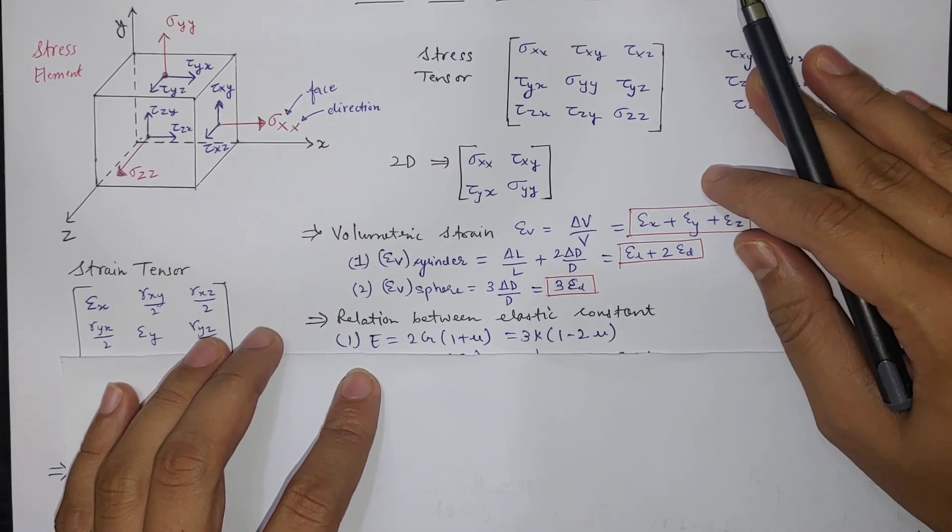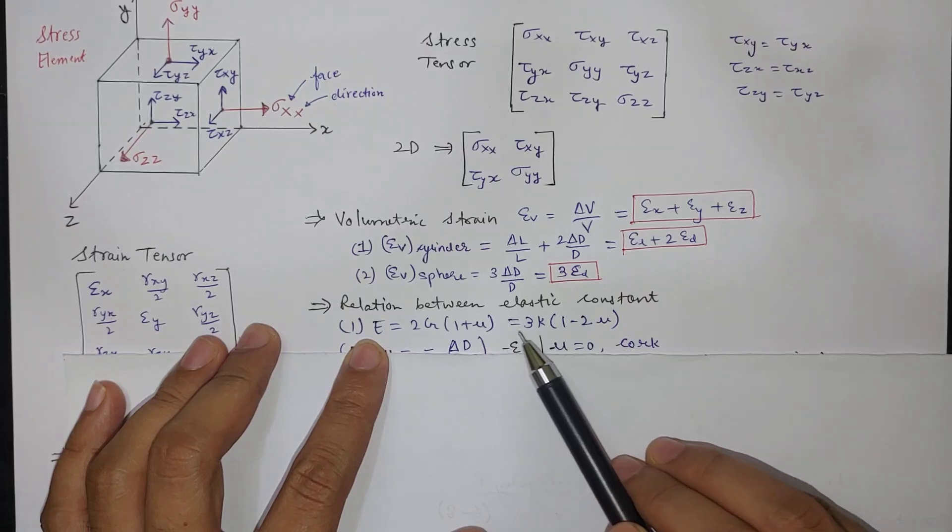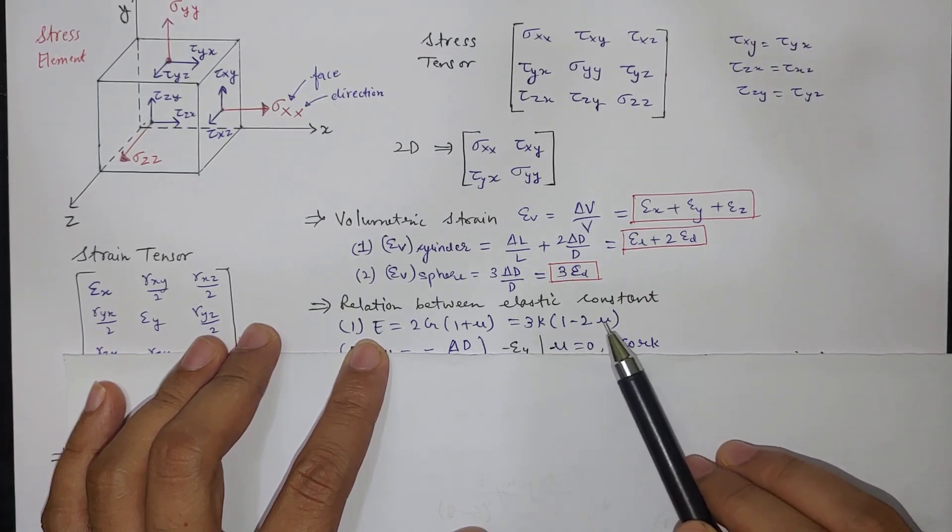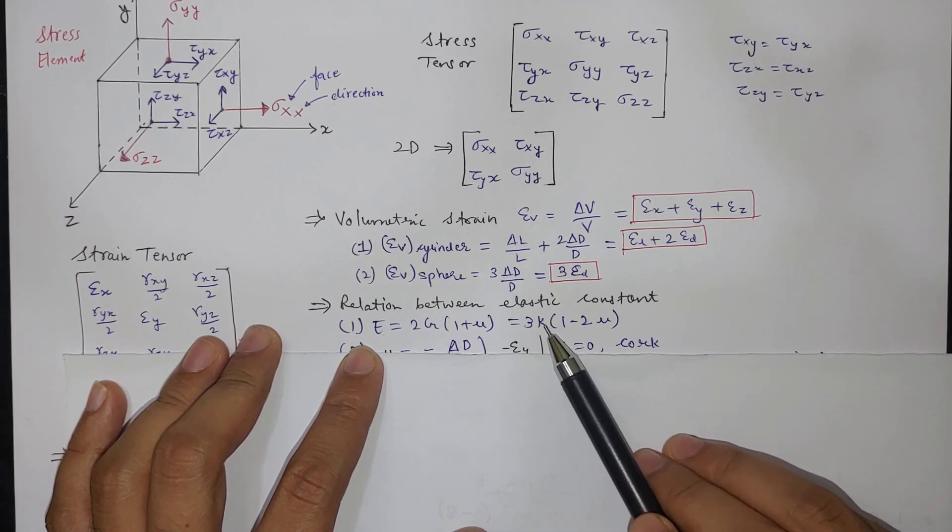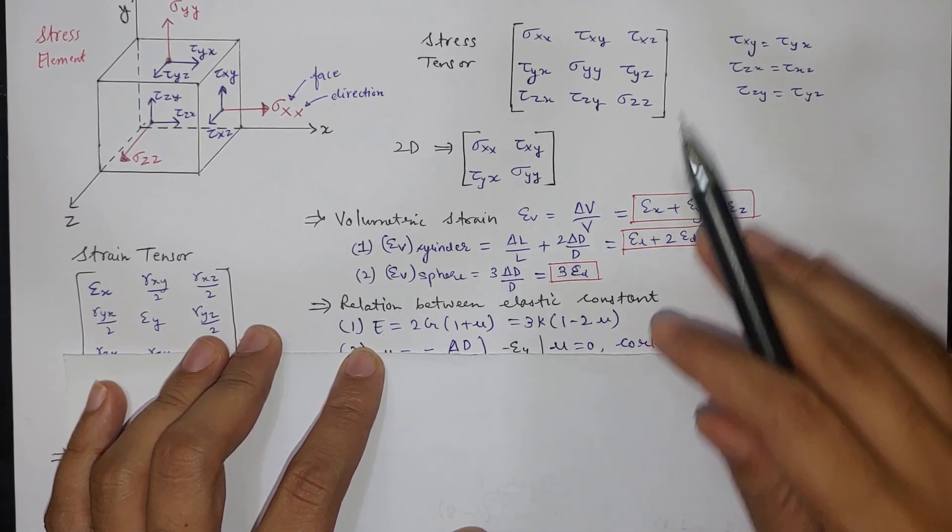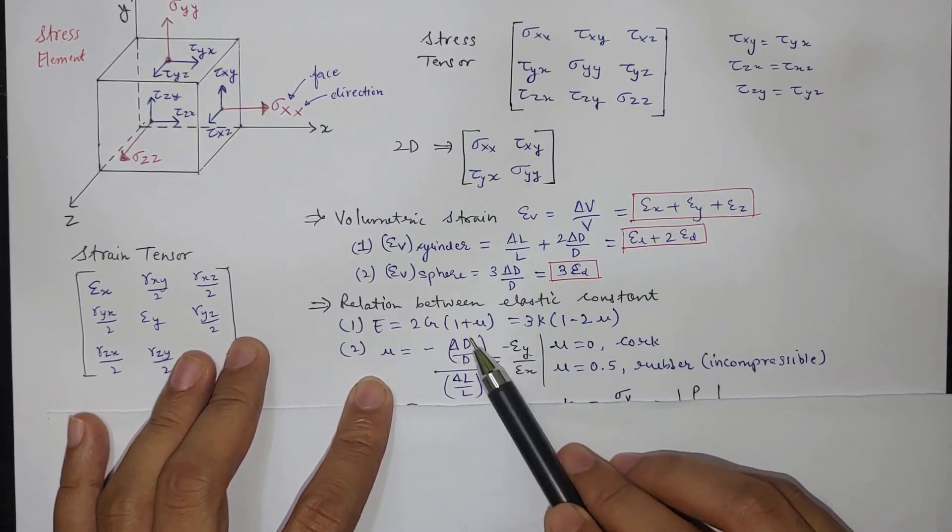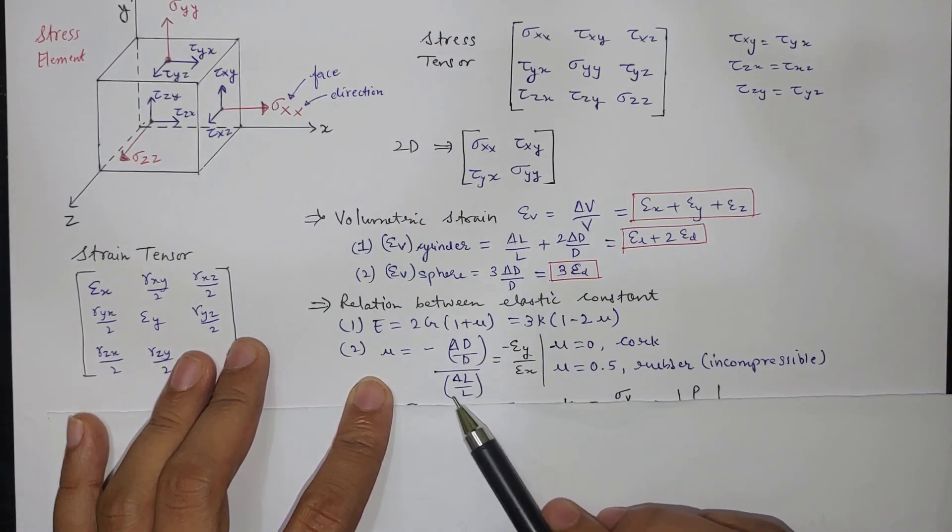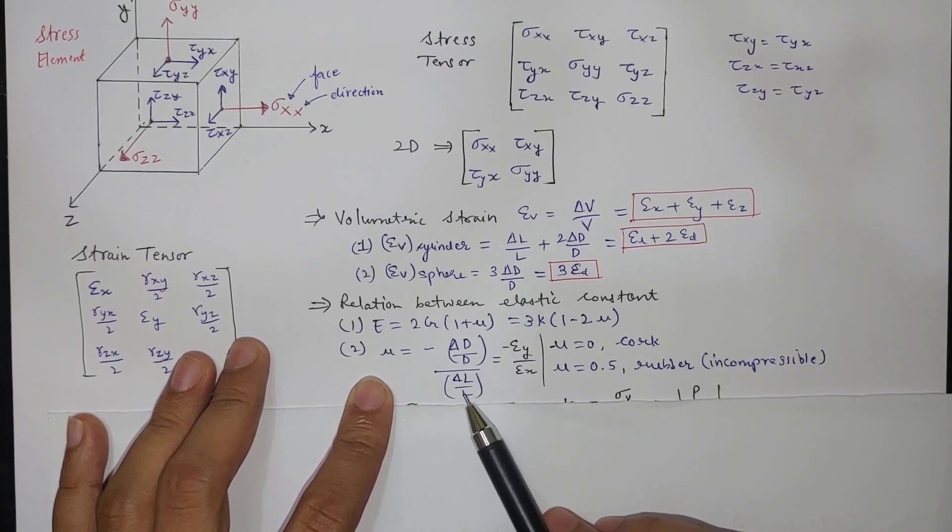Now if we see relation between some elastic constants then E is equal to 2G into 1 plus mu equal to 3K into 1 minus 2 mu. Here E is young modulus and G is modulus of rigidity and K is bulk modulus. Mu is Poisson ratio and if you see Poisson ratio is lateral strain upon normal strain.